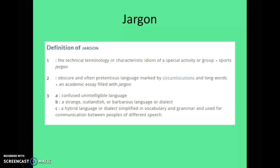The second part of the definition is obscure and often pretentious language marked by circumlocutions and long words. This is often what we find in academic and science writing where jargon is too heavily or excessively used — to the point where we have to read a sentence, which is usually also very long, over and over to grasp the meaning. I'm going to show you an example that Helen Sword uses and take you through a revision process. The third part of the definition is just general outlandish, unintelligible, hybrid language. So jargon is basically a way of speaking and expressing ourselves — and it doesn't necessarily mean it's always a bad thing.